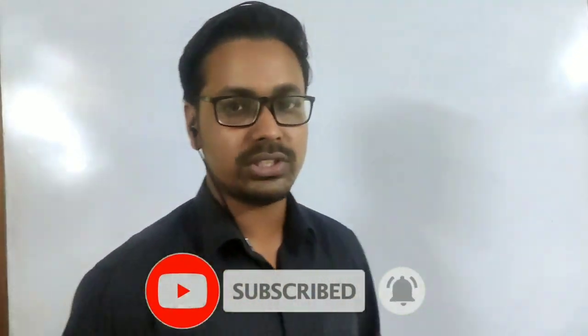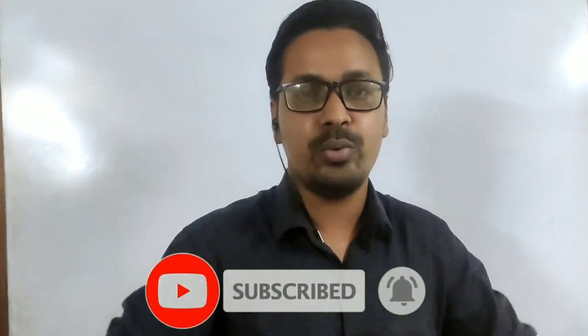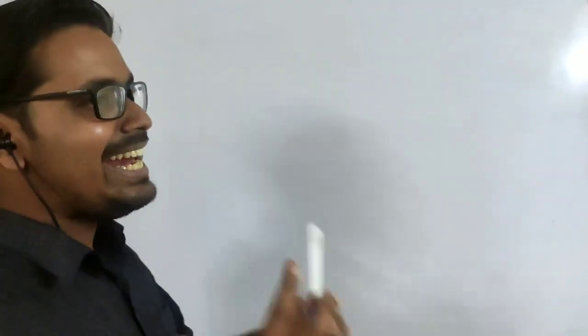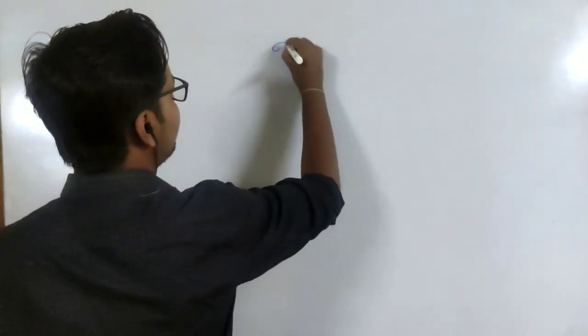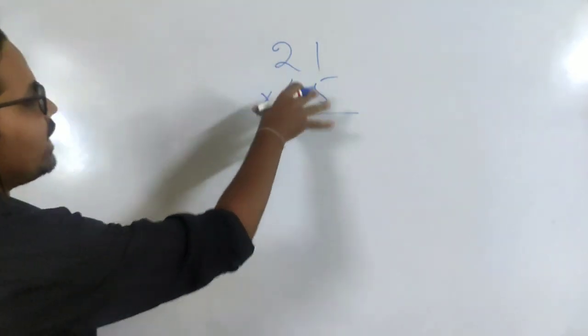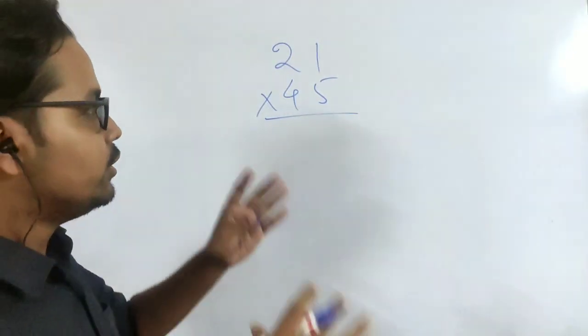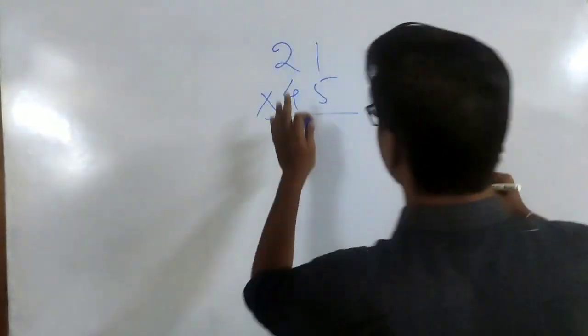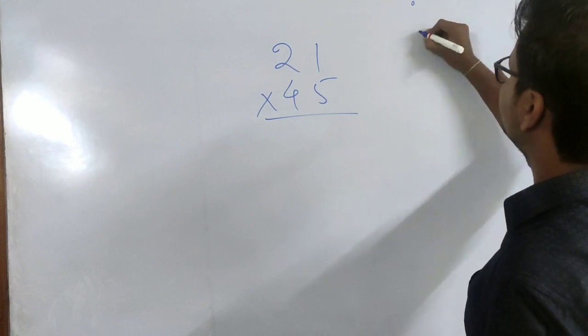So for the simplicity we are going to start with a 2 digit number so that you get the idea and we move on to 3 digit and 4 digit numbers. Let us take any 2 digit number for example we take 21 and we take 45. Before we start I would like to show you one pattern. I am giving the digits as dots.